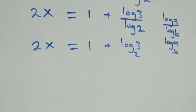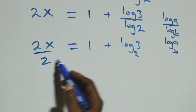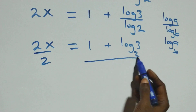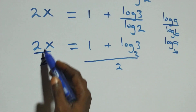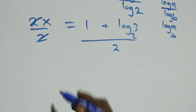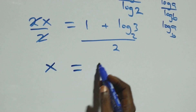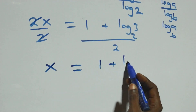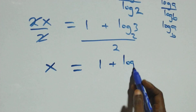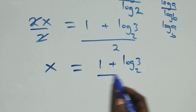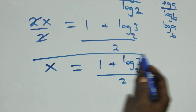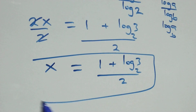The next step, we divide both sides by 2. Divide this side by 2, also divide this side by 2. The 2s cancel each other. We have x left, which equals to 1 plus log 3 base 2, all over 2. So here we have the value of x in this problem as (1 plus log 3 base 2) all over 2.